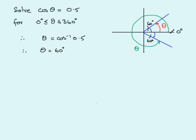To get the green theta: going all the way around is 360 degrees, but we are short by 60 degrees, so this angle is 360 minus 60, which equals 300 degrees. So our two solutions are theta equals 60 degrees and theta equals 300 degrees.